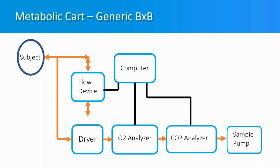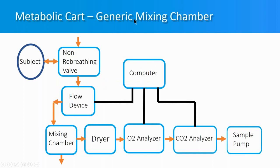There are two types of metabolic carts: the breath-by-breath system and the mixing chamber system. In the breath-by-breath system, the gas sample is drawn directly from the subject's mouth to be analyzed by the gas analyzers, while the subject expires to a flow device to measure flow. Mixing chamber systems add a non-rebreathing valve and a mixing chamber. The non-rebreathing valve allows only expiratory air into the mixing chamber, which mixes the expiratory air for a more homogeneous sample, and the gas sample is then drawn from the mixing chamber.